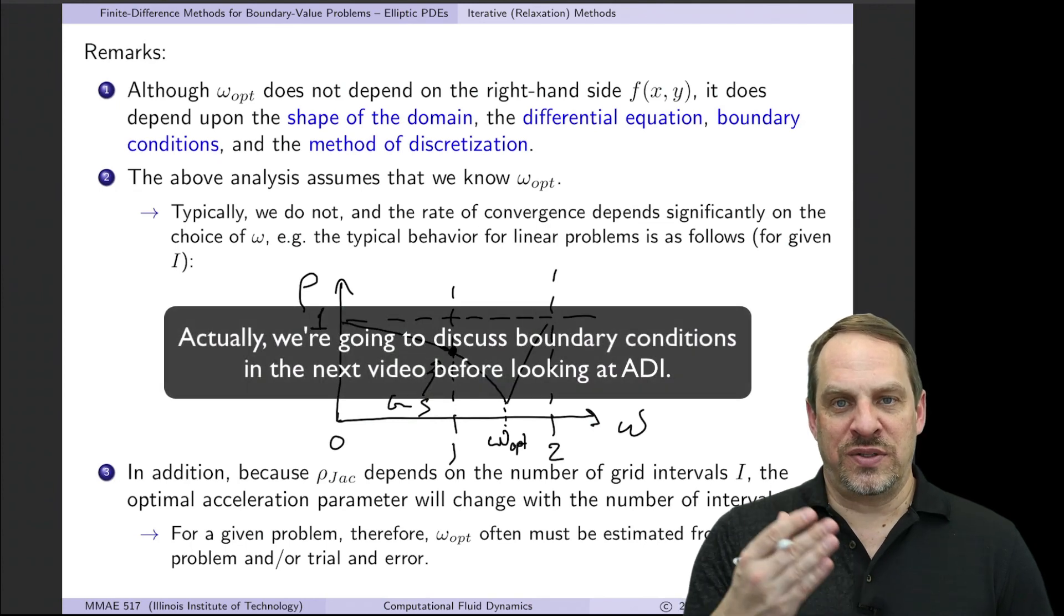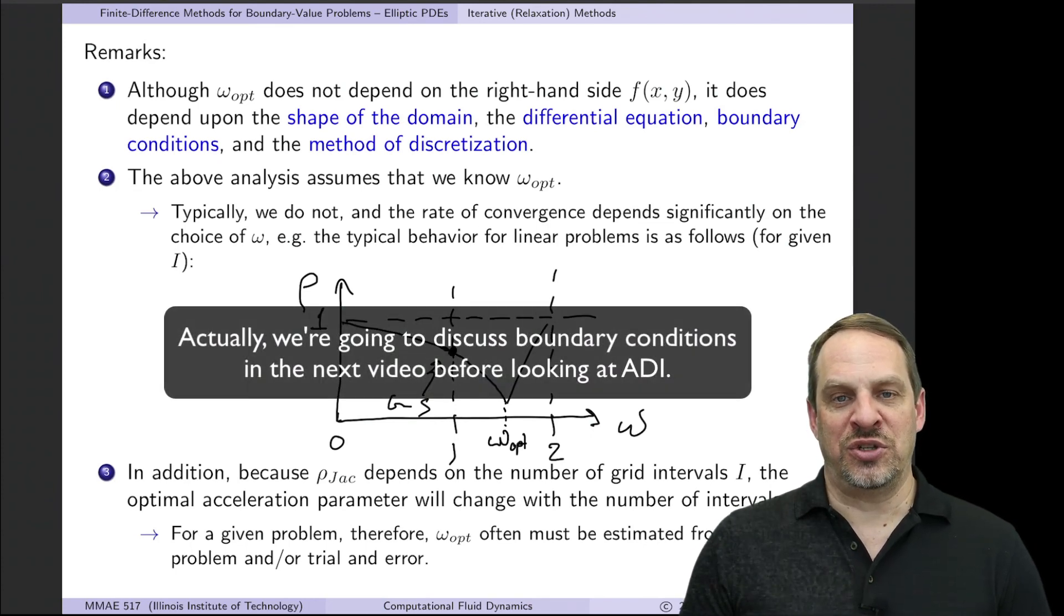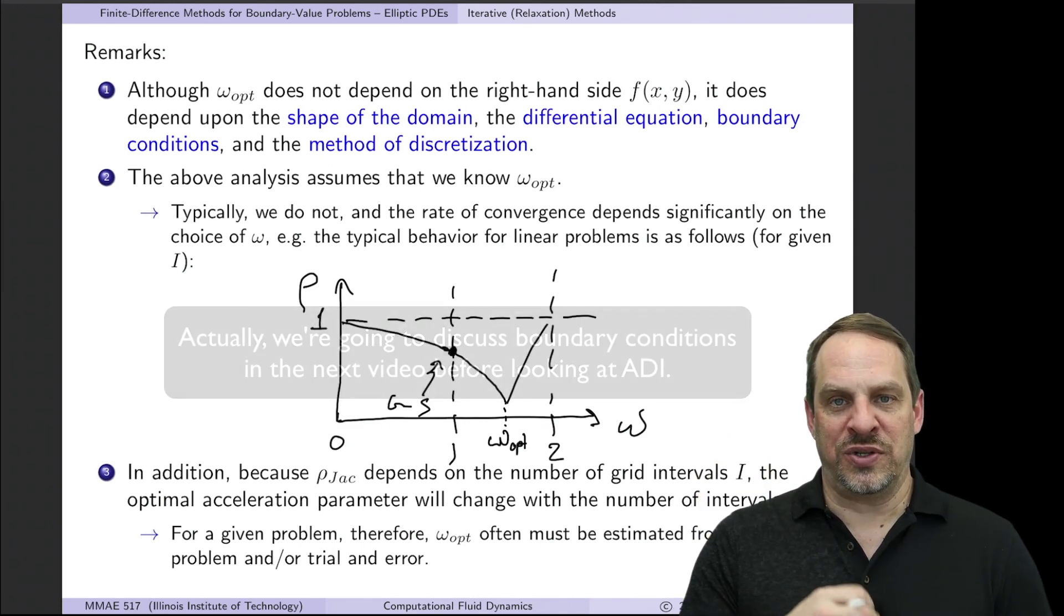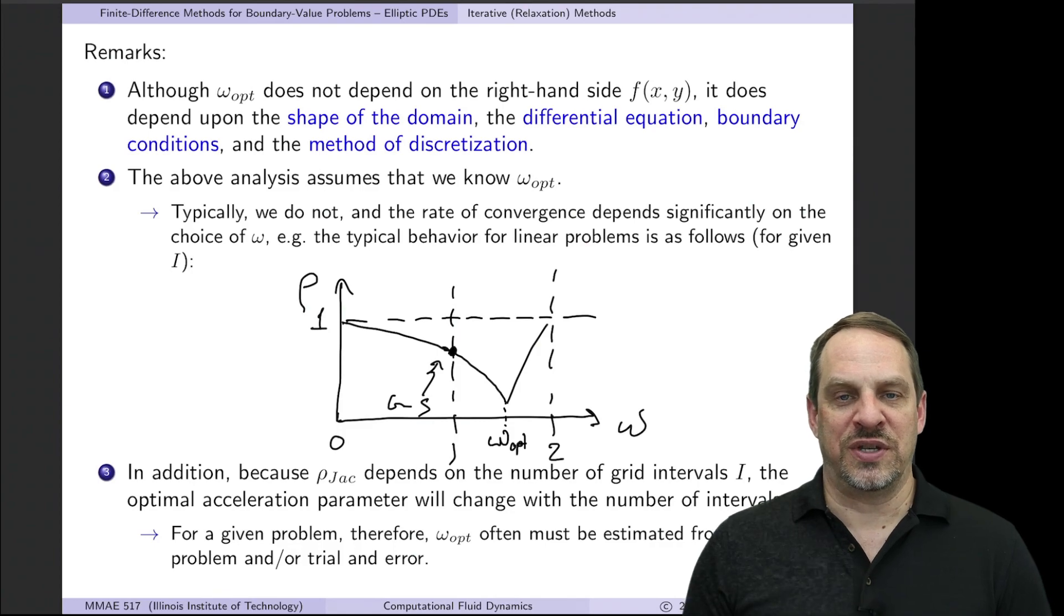Now in the next video, we're going to look at a more advanced method called the Alternating Direction Implicit or ADI method. It's a numerical method that's more faithful to the mathematical character of the Poisson elliptic equation. We'll discuss that in the next video.